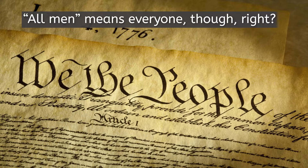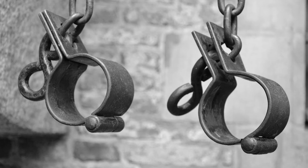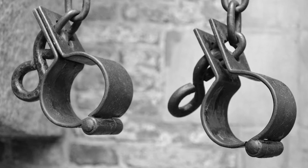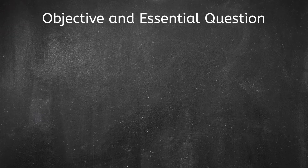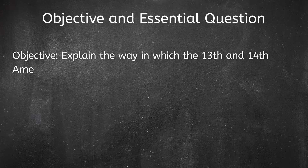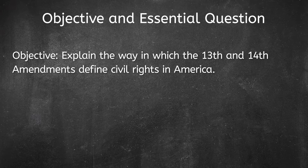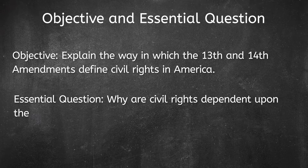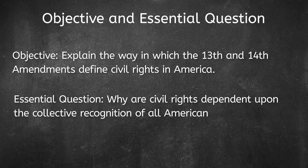So, what about the fact that slavery was still a major part of society when the Declaration was written? Today, at the end of the lesson, you will be able to explain the way in which the 13th and 14th Amendments define civil rights in America. And today's essential question is this: Why are civil rights dependent upon the collective recognition of all Americans as citizens?